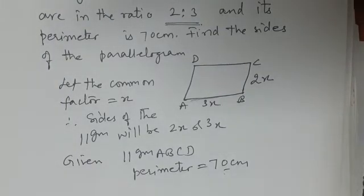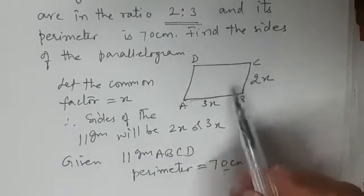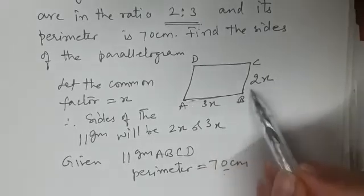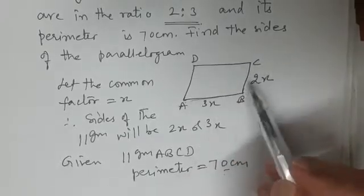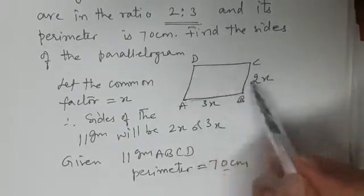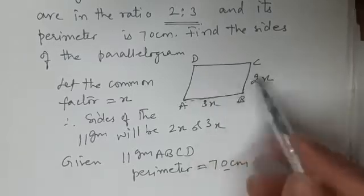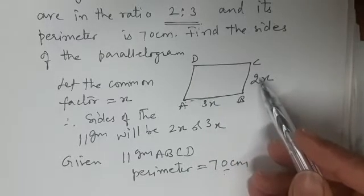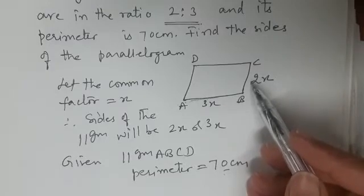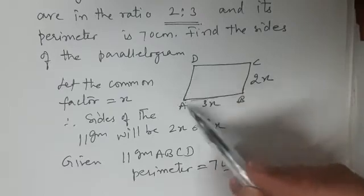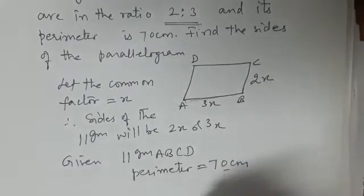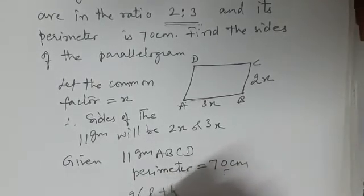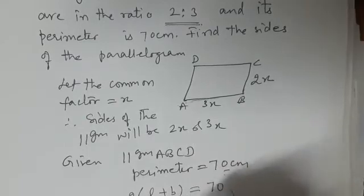What do you mean by perimeter of a parallelogram? The basic concept is that we need to add all the sides: AB plus BC plus CD plus DA. You know that in a parallelogram opposite sides are equal, so the same formula we apply for a rectangle applies here. The perimeter of a parallelogram is 2(l+b), which equals 70.